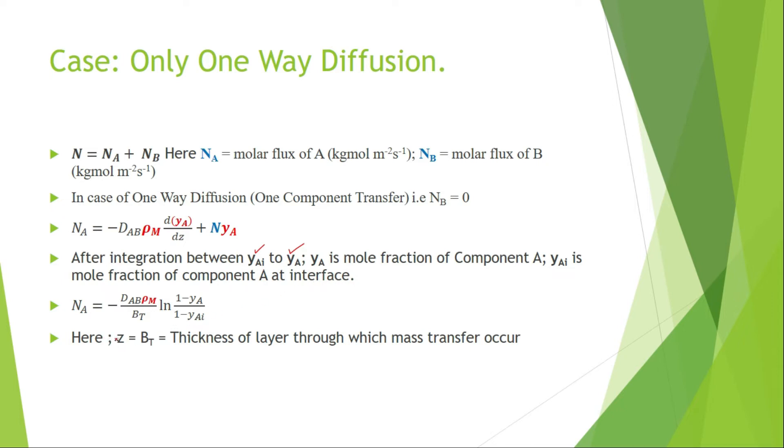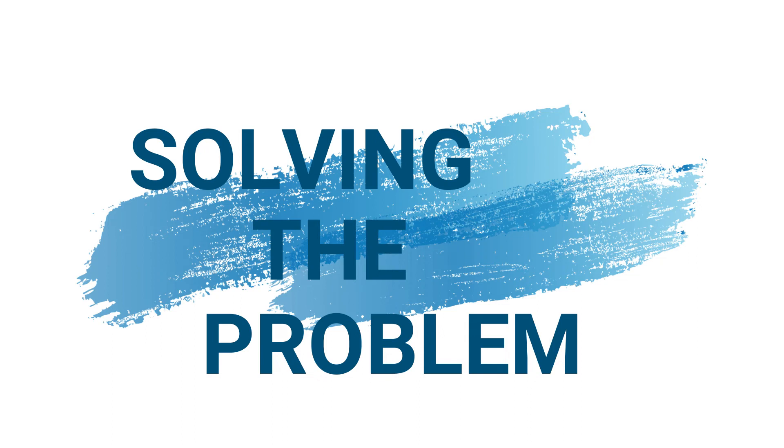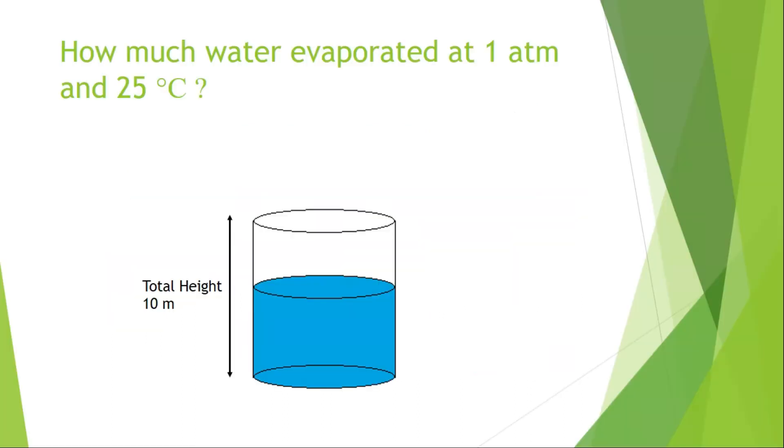Here, BT is the thickness of the layer through which mass transfer occurs. The thickness of the stagnant air above the liquid surface is 3 meters.